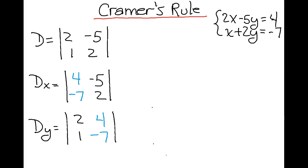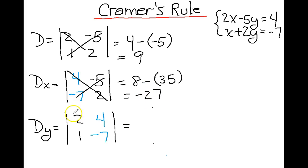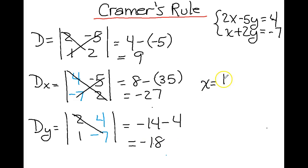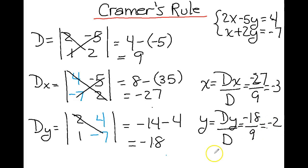Let's calculate these determinants. For D, we get 4 minus negative 5, which is 9. For D sub x, we get 8 minus 35, which is negative 27. For D sub y, we get negative 14 minus 4, which is negative 18. So x equals D sub x over D: negative 27 over 9 equals negative 3. y equals D sub y over D: negative 18 over 9 equals negative 2. The solution is the ordered pair negative 3, negative 2.